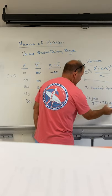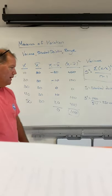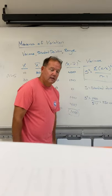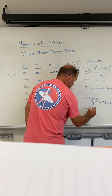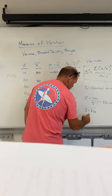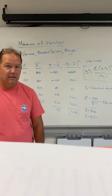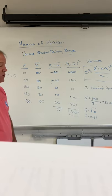Now, if I left the answer just like that, that would be units squared. And we don't want that because we're talking about the price of paint. The price of paint doesn't go in units squared. So if we take the square root of 250, $15.81 is going to be our standard deviation.